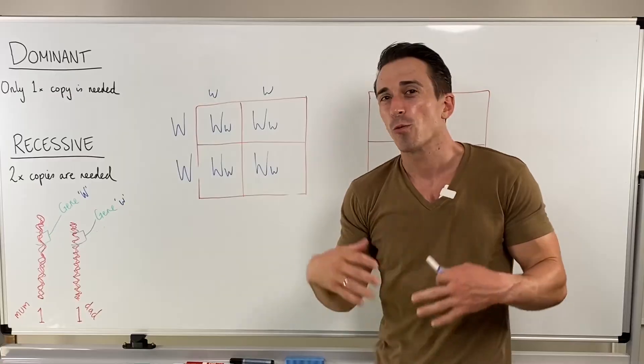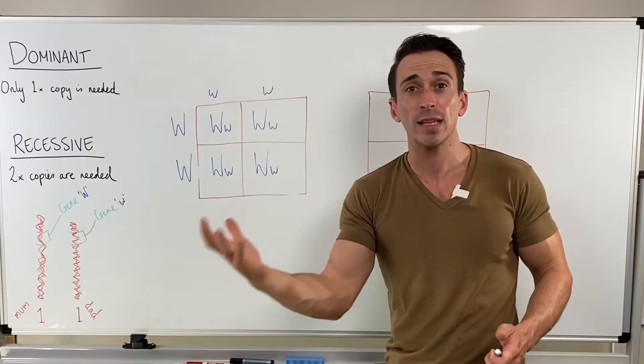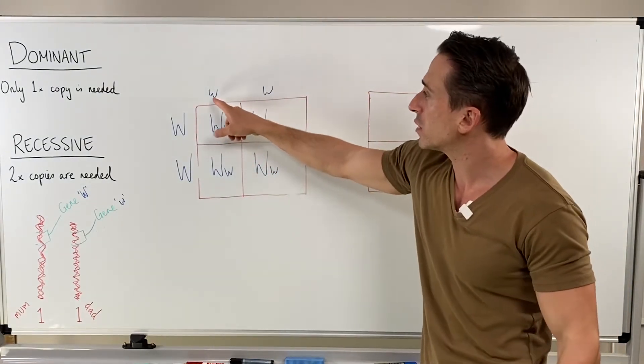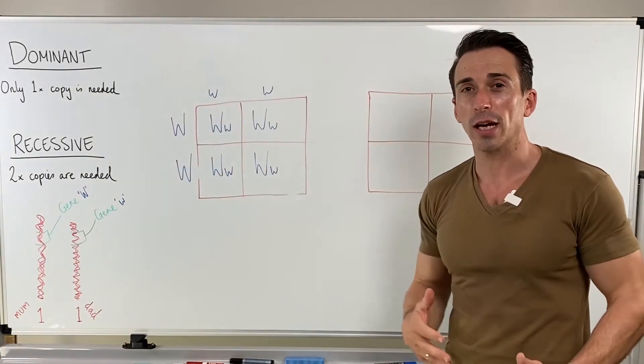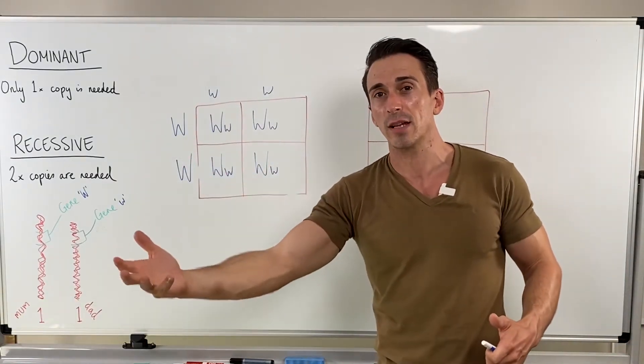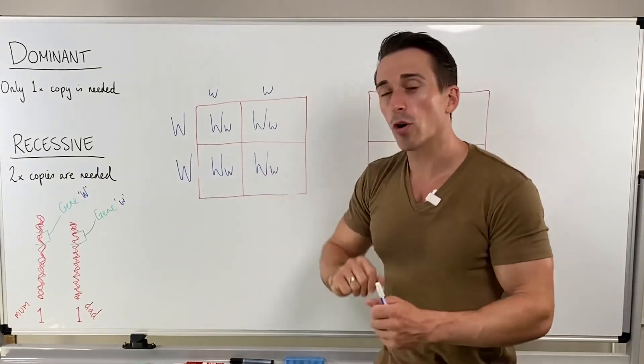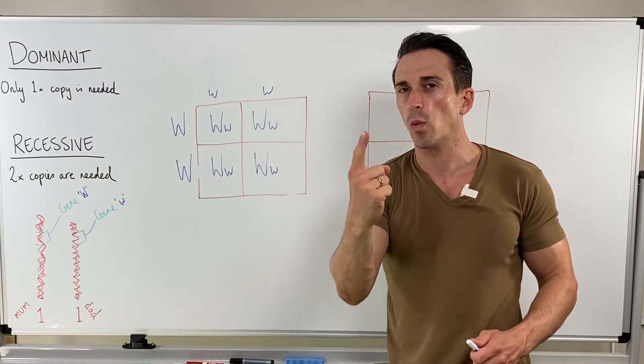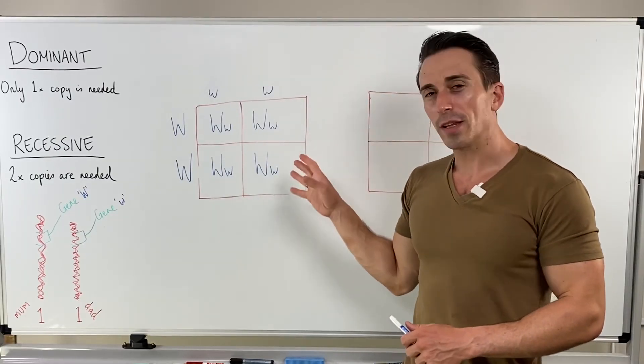Does that make sense? Recessive inheritance is different because you need two copies to manifest the phenotype. In this case, it's going to be the phenotype of the straight or flat hairline. And you need two of these lowercase copies. So any offspring that contains two lowercase copies of this gene is going to be recessively inherited, and it's going to manifest with the phenotype of a flat hairline. Again, single copy here of this gene, of the uppercase. Dominantly inherited, you only need one to manifest that V, that widow's peak.